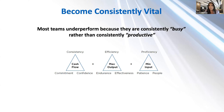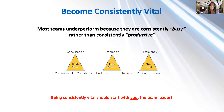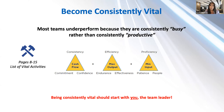Being consistently vital should always start with you as the team leader — knowing what those vital activities are going to be for your team. In the workbook, pages 8 through 15 have lists of vital activities for different roles, and how you can determine which activities for your business are going to help with that consistent cash flow, maximum output, and minimum input. You'll have this PowerPoint so you don't have to write it all down.